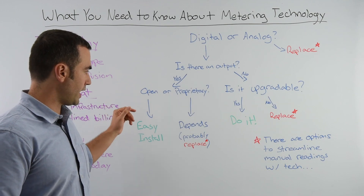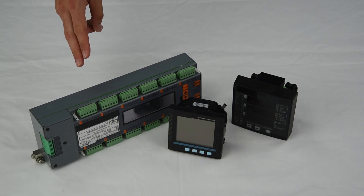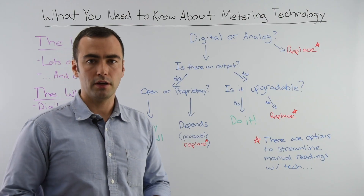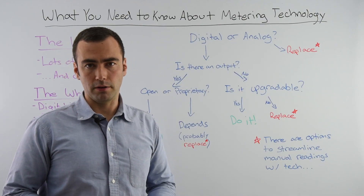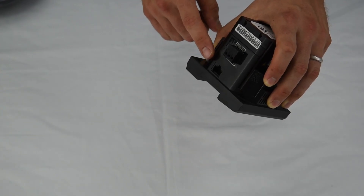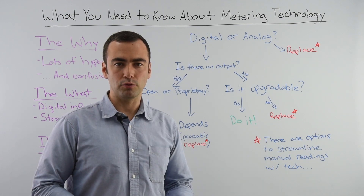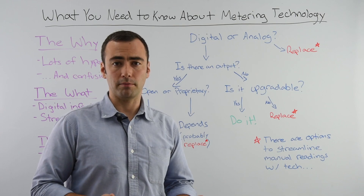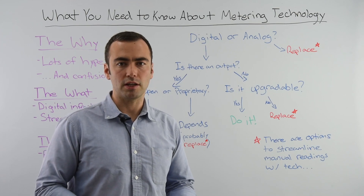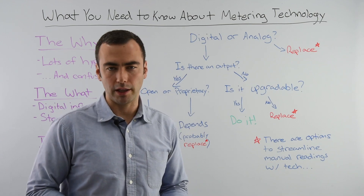Let's look first at the open protocol meters. Here are some examples — this is a branch circuit meter and these are examples of panel mounted meters. Regardless of the particular model, the main thing to look for are ports that look like this or like this. If your existing meters have one of those, it's very likely that you'll be able to collect data from them digitally and that your building is ready for things like mesh networks and bridges, which make it very easy for submetering companies like Enertiv to collect the data and send it to the cloud immediately.